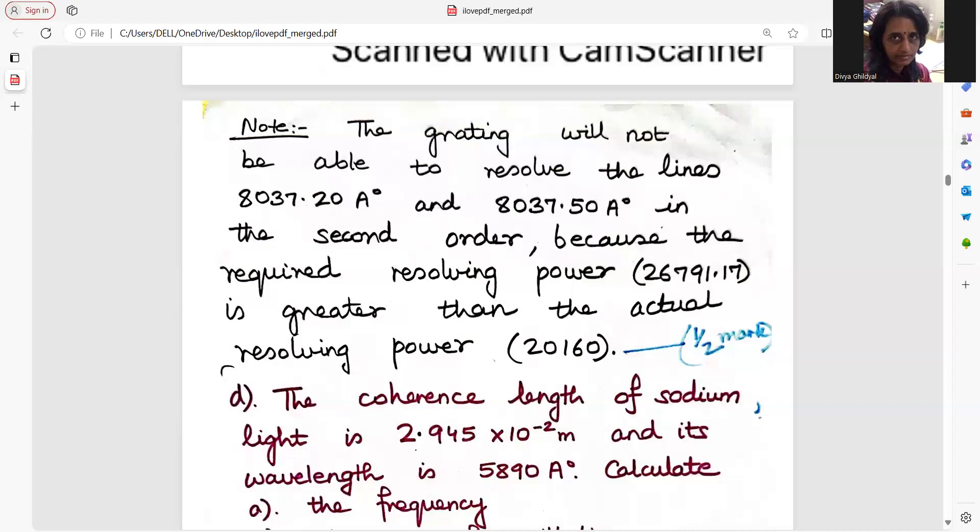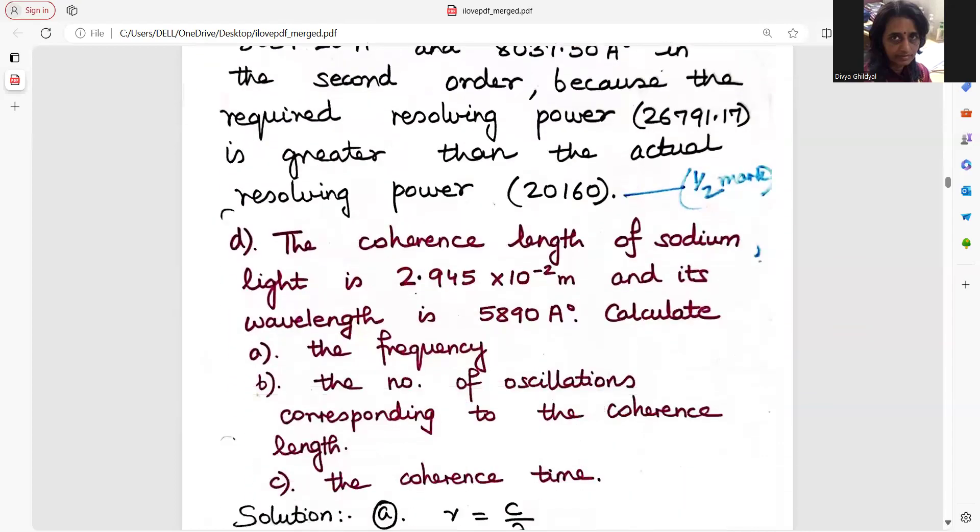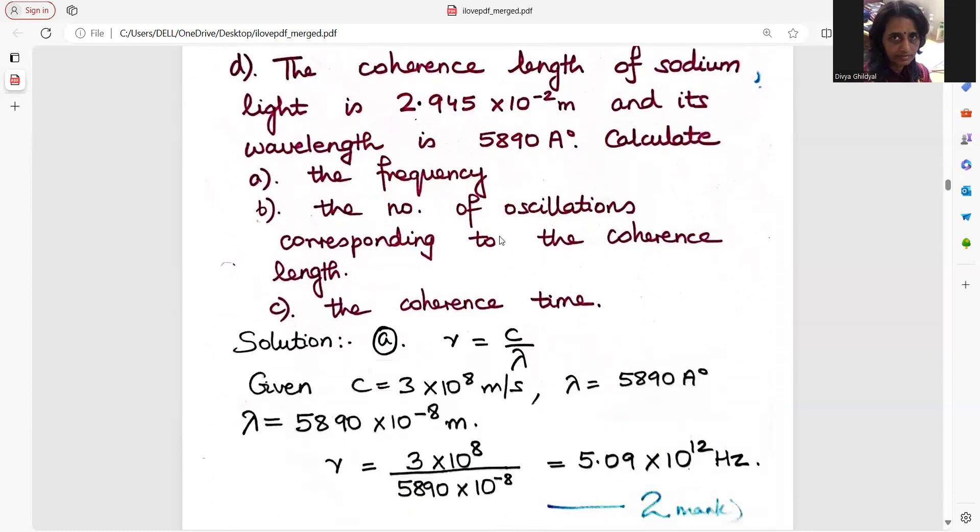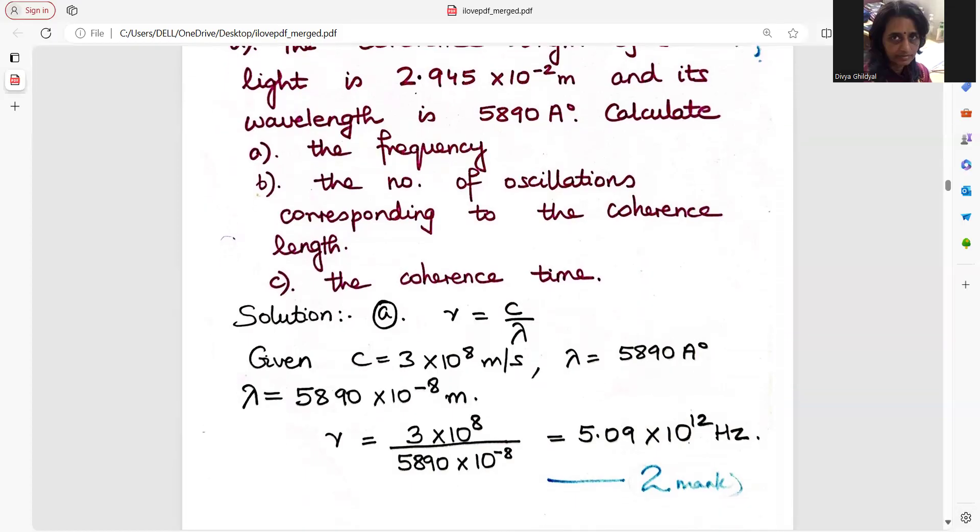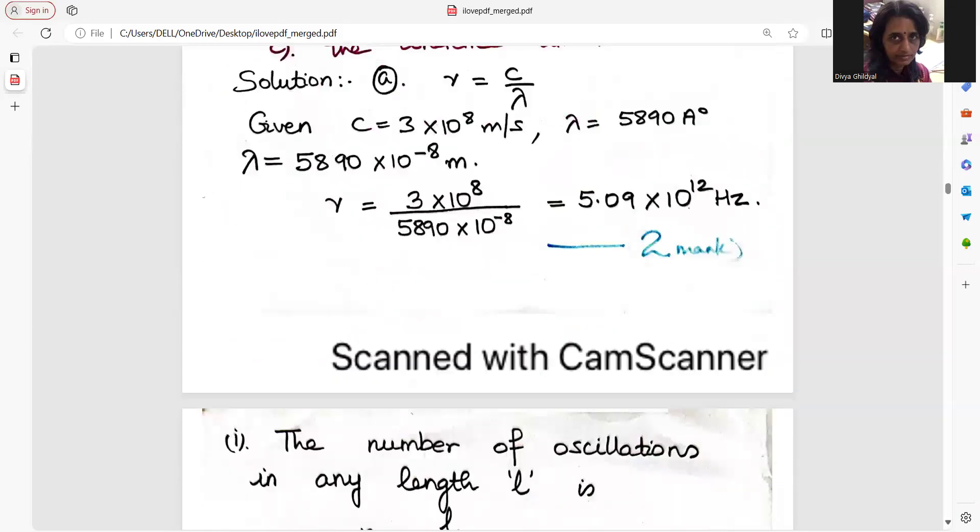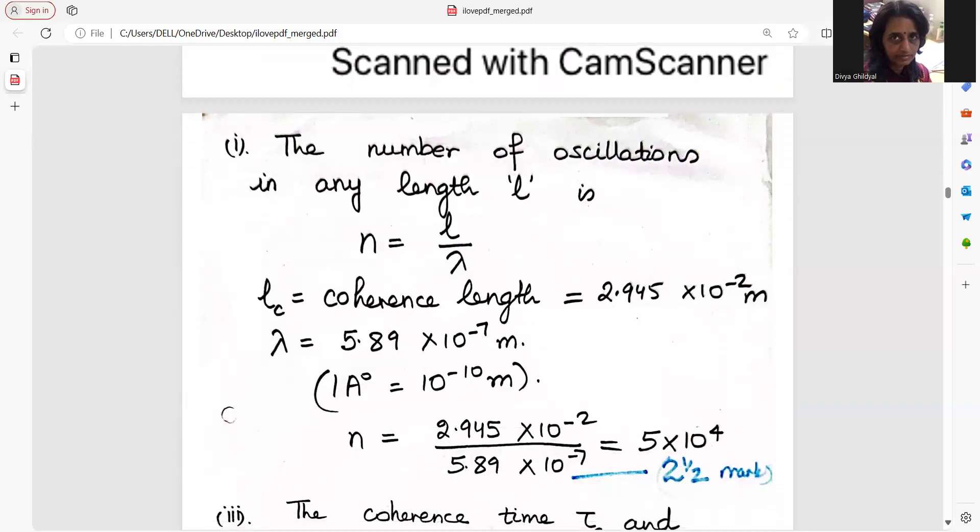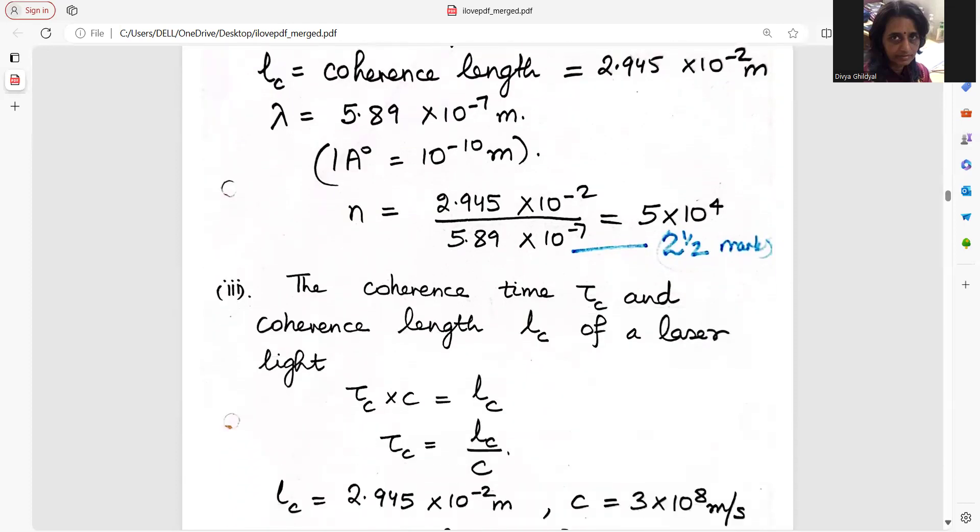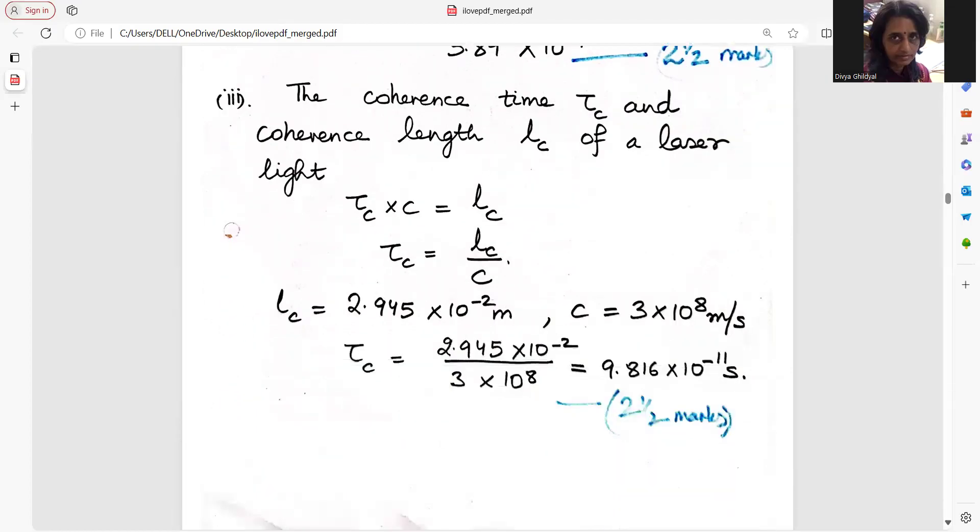Next question is from laser. The coherence length of sodium light is given, its wavelength is given. You have to find the frequency, number of oscillations and the coherence time. Seven marks will be divided somewhere as either two and a half, two and a half, five, six, seven, this way. Very famous formula of frequency is c upon lambda, c is meter per second. Lambda, one angstrom is 10 to the power of minus 10 meter and you get frequency. Number of oscillations in any length is equal to l upon lambda, where l here will be your coherence length and lambda, you put the value direct. Coherence time: very famous formula, distance, speed into time, just put the numerical values and you get your answer. This is laser numerical.